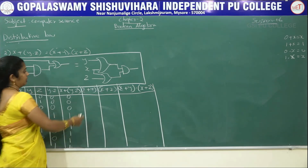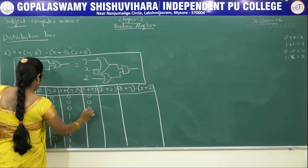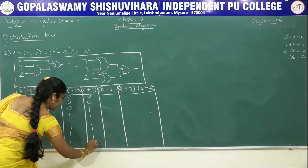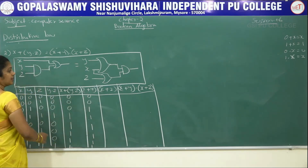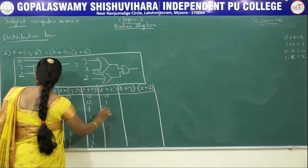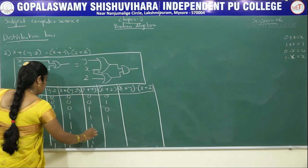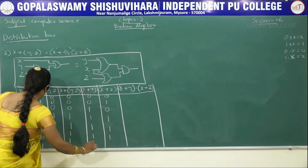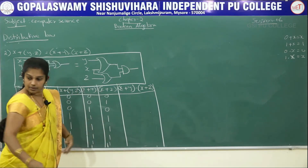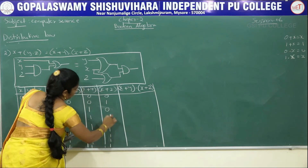For x+y: 0+0=0, 0+0=0, 0+1=1, 0+1=1, 1+0=1, 1+1=1, 1+0=1, 1+1=1, giving 0,0,1,1,1,1,1,1. For x+z: 0+0=0, 0+1=1, 0+0=0, 0+1=1, 1+0=1, 1+1=1, 1+0=1, 1+1=1, giving 0,1,0,1,1,1,1,1.